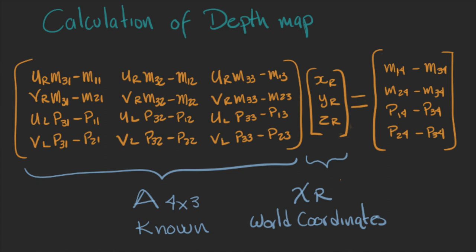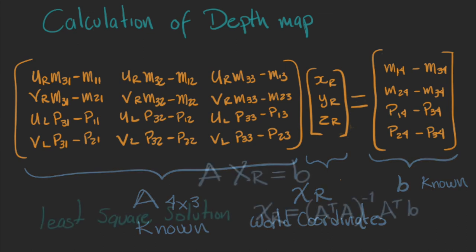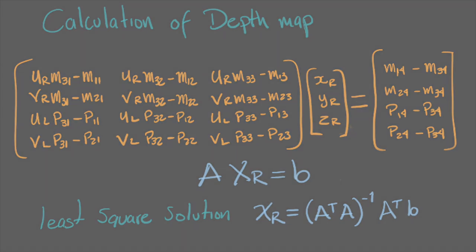If you remember the example of simple stereo, this is the distance b. So, now you can solve this system using least squares to obtain xr. And that will give you the depth map for each pair of points.